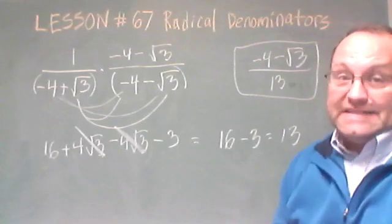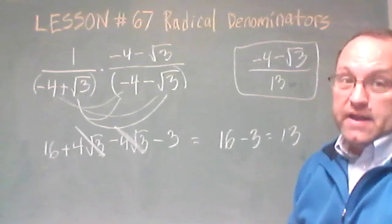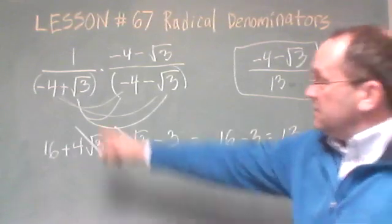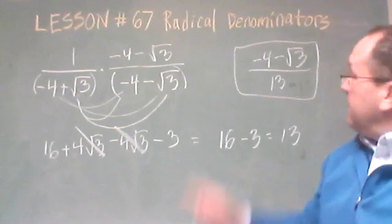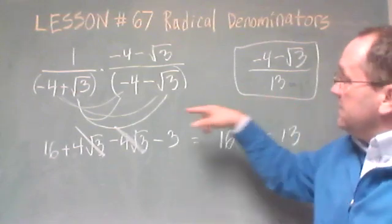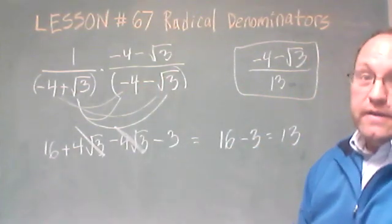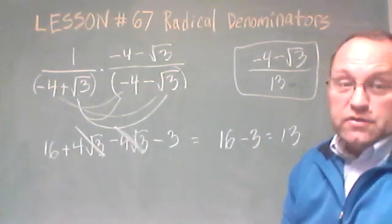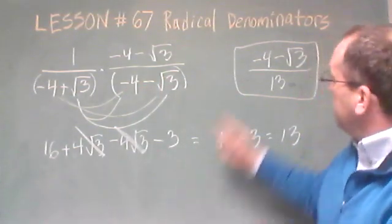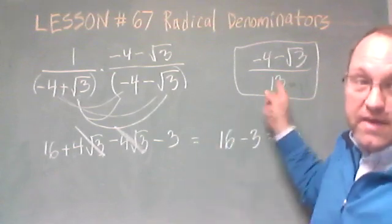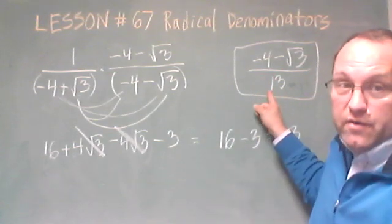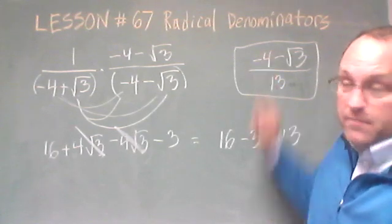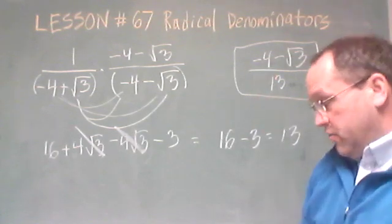That is our simplified expression. Now, does it look any simpler than the first? We have two numbers and one square root in a fractional form in both cases, but mathematicians like this better because we don't have that square root in the denominator — it's moved up to the numerator.